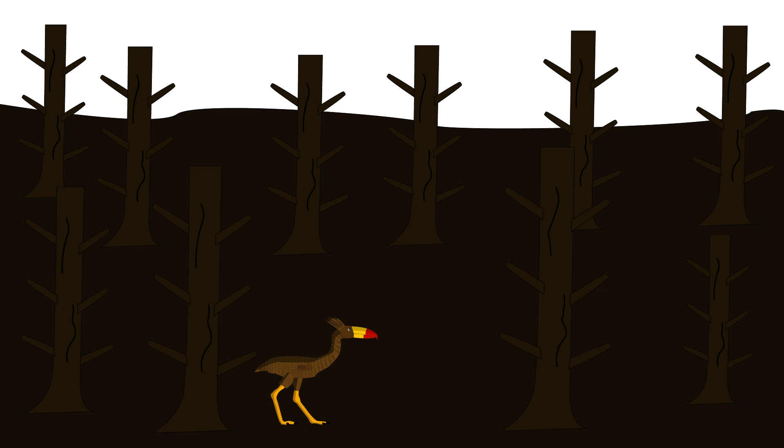One day, you spot movement—a juvenile terror bird. You snarl, prepare to chase it off. But it doesn't run. It mimics your stance, tilts its head just like you. For a moment, it looks like your shadow. Then it charges at a rabbit, misses, and flops into a tree. You pause, then walk away. Maybe for now, someone else can carry the nightmare forward.